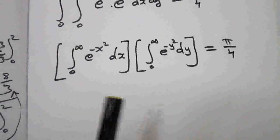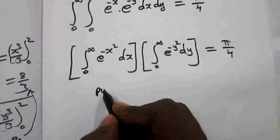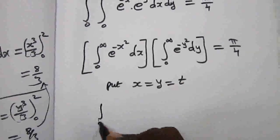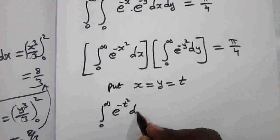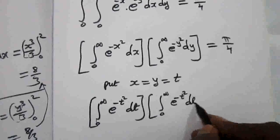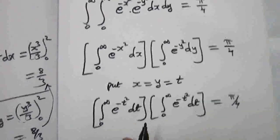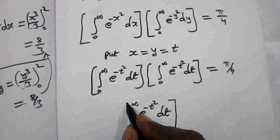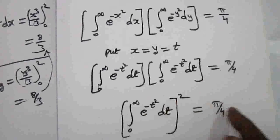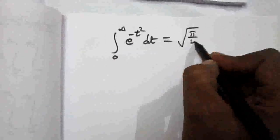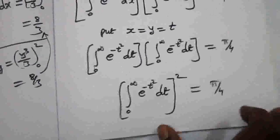Here also, x and y are dummy variables, so we can let x equal y equal t. Then the integral from 0 to infinity of e to the power minus t squared dt, times itself, equals π/4. Both integrals are the same, so this can be written as the integral from 0 to infinity of e to the power minus t squared dt, squared, equal to π/4. Taking the square root, the integral from 0 to infinity of e to the power minus t squared dt equals the square root of π/4.